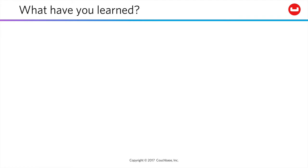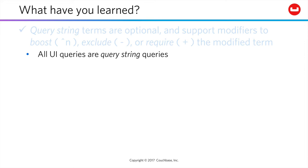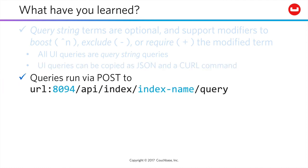So what have you learned here? Query string terms are optional by default and support modifiers to boost, exclude, or require any given search term. This query type is often what users expect for a standard text field in a web page type of query. There are a lot of other types as well, as we'll be seeing ahead. All queries that run through the Couchbase UI are these query string queries, and they support these modifiers. You can copy these queries out of the UI to run them from a terminal or through a REST API testing tool. Queries get posted to this URL, which includes the index name and is at port 8094, not 8091, which is where the UI runs.